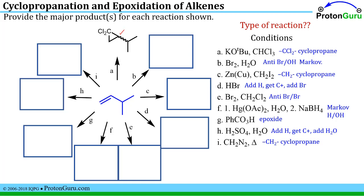Moving to condition B: an alkene addition with a halogen is anti-addition. With another nucleophile present in addition to the halogen, we add one halogen and one nucleophile, and they add Markovnikov. On your scratch paper you note: Markovnikov means the OH goes on the more substituted side and the Br on the less substituted side. That generates a stereocenter, so we should get a racemic mixture of that product.